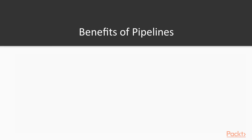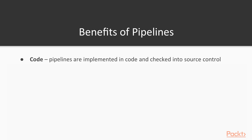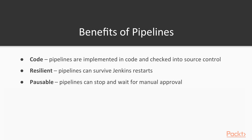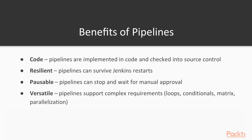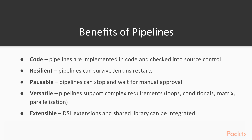Which benefits do pipelines bring over standard Jenkins jobs? First, pipelines are expressed as code and can therefore be stored under version control like any other script. Their resilience is higher since they can survive a Jenkins restart and can be rebuilt from a previous stage. Pipelines can also be paused and wait for a manual approval — useful if the business needs to give a go-ahead before a promotion or deployment to production. Pipelines are also very versatile and can support complex requirements like loops, conditional and matrix processing, and parallelization of jobs. They can also be extended via domain-specific language scripts and shared libraries written in Groovy.